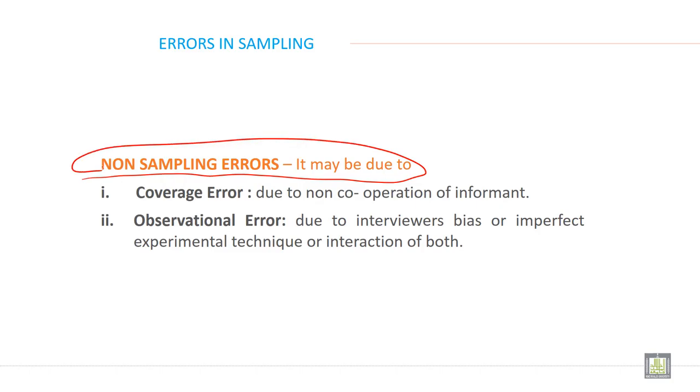Non-sampling error is two types. First one is coverage error, which is due to non-cooperation of informant. And the second one is observational error, which is due to interviewer bias or imperfect experimental techniques or interaction of both.